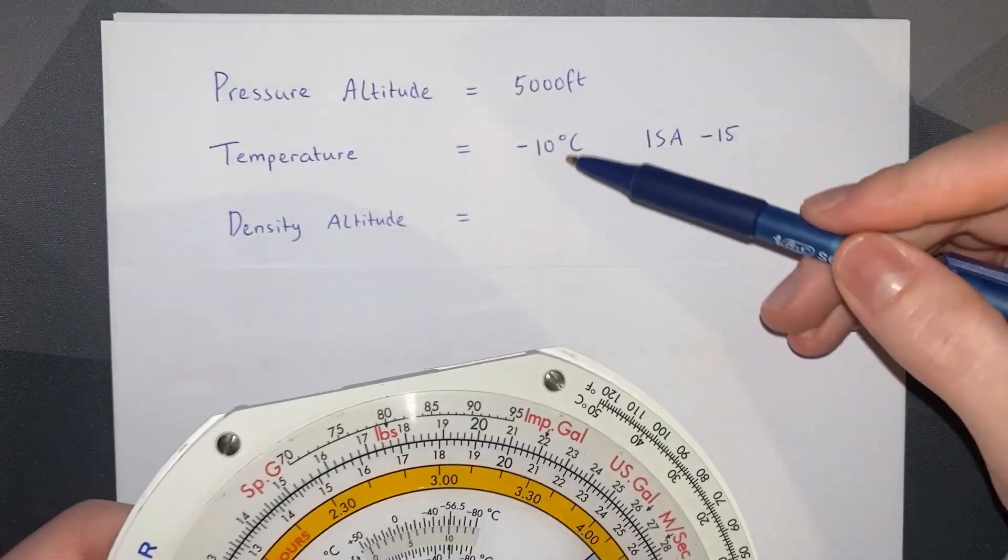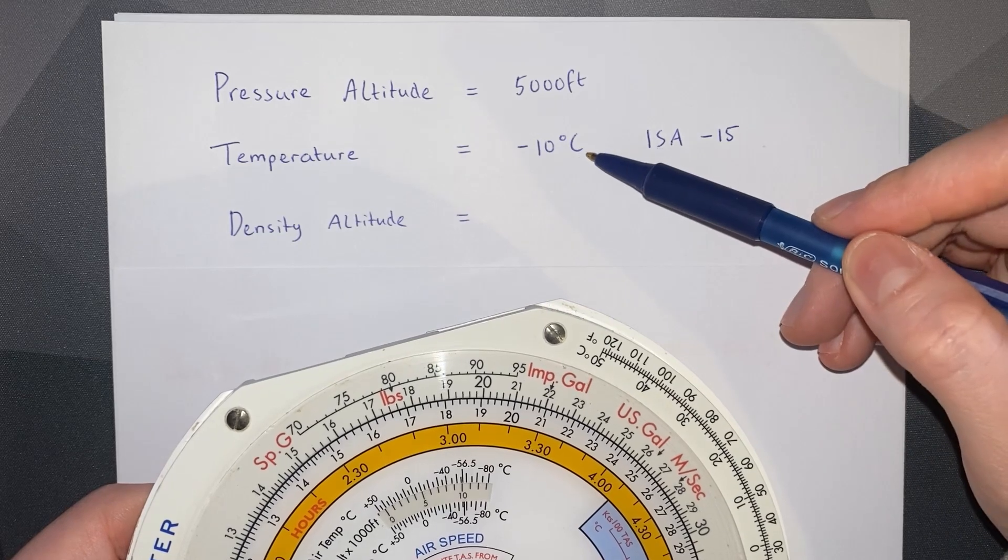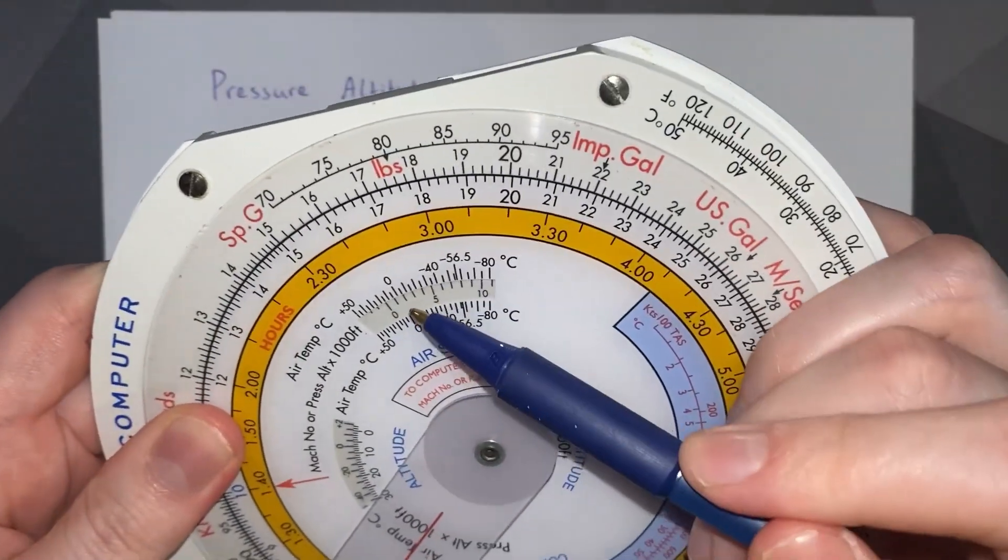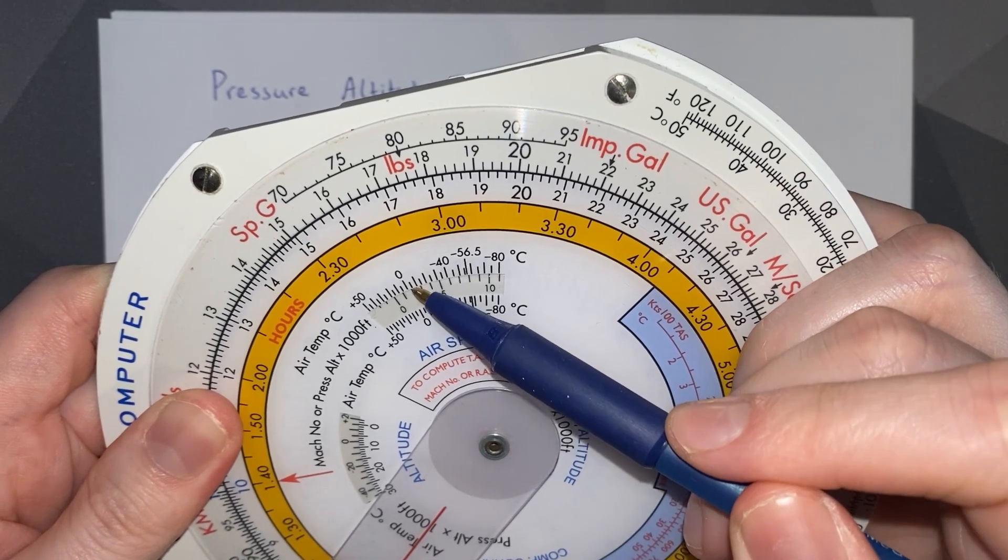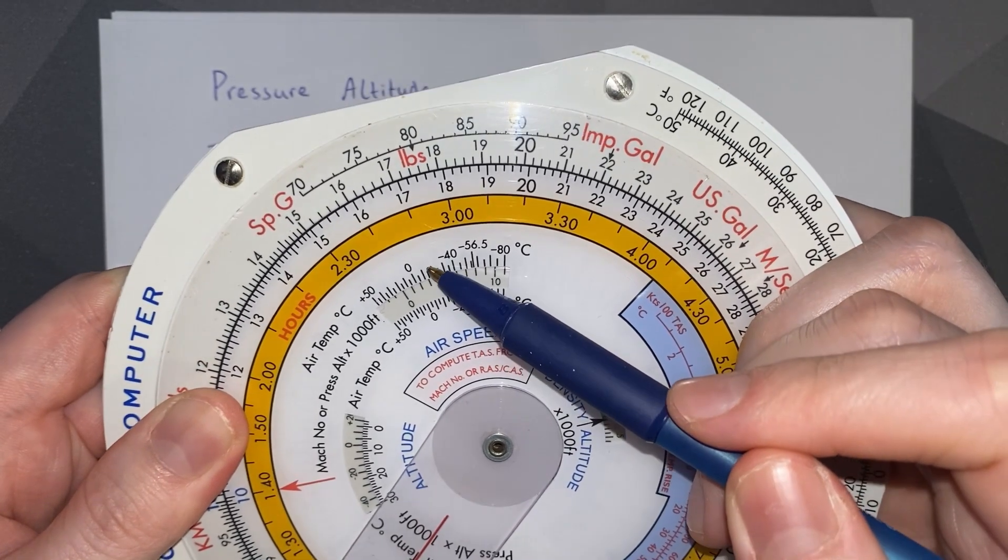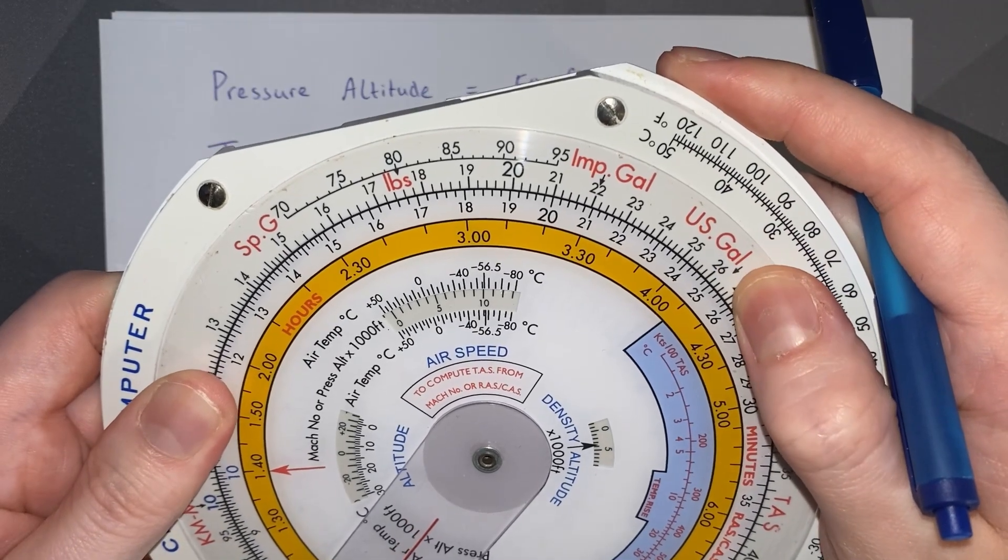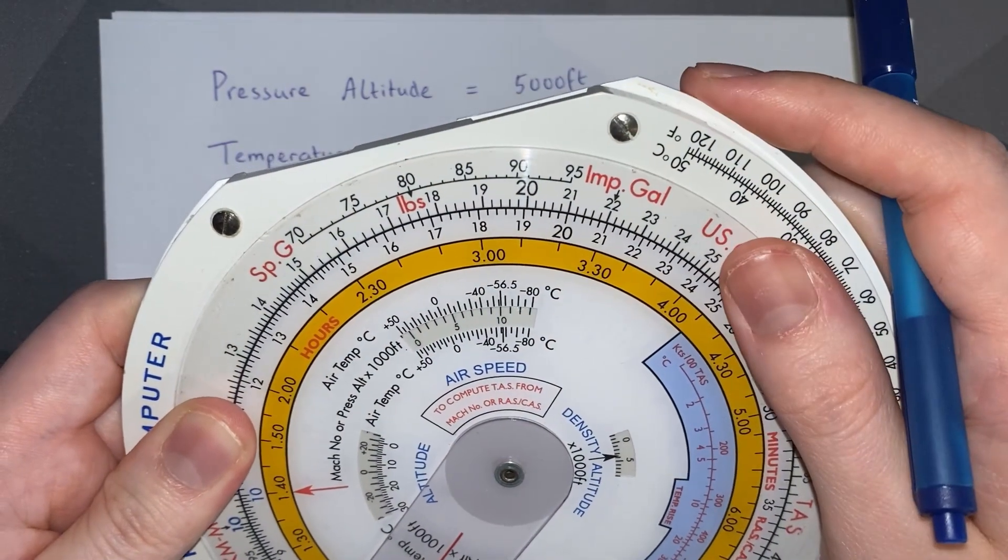Going back to our example, we want to plot minus 10 degrees against 5,000 feet. So we get minus 10 degrees on the outside scale, which is here, and line that up with 5,000 feet, just like that.